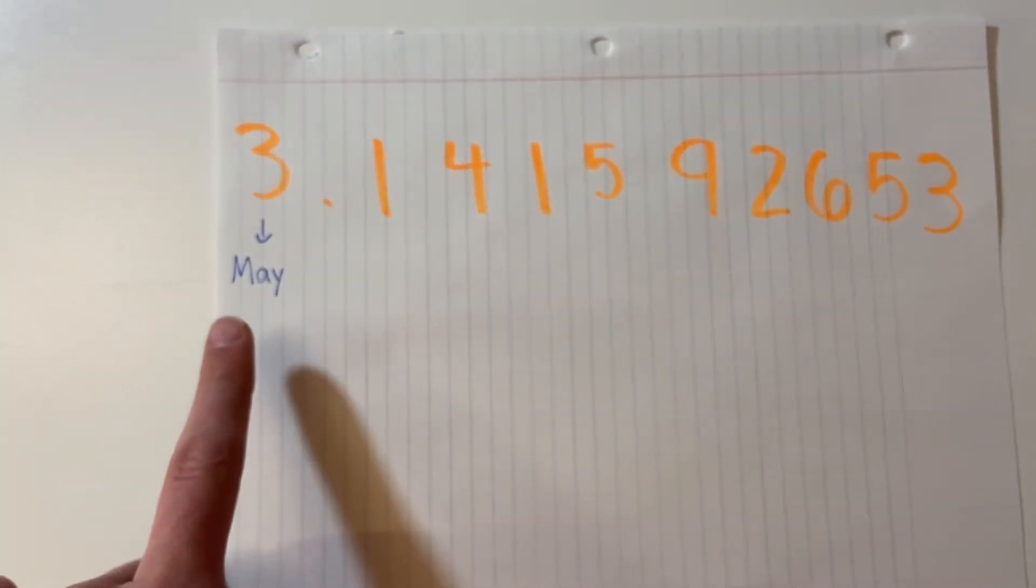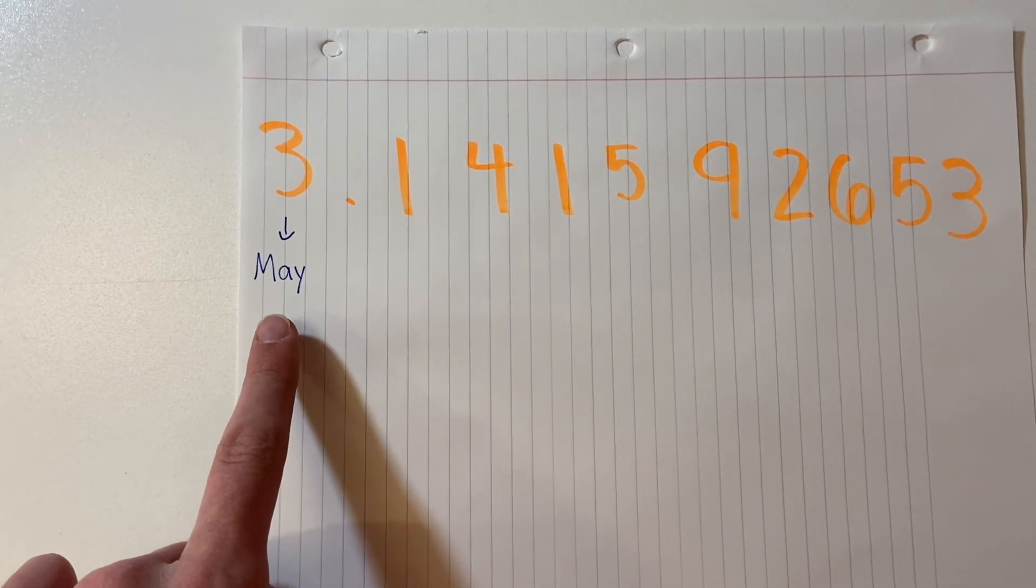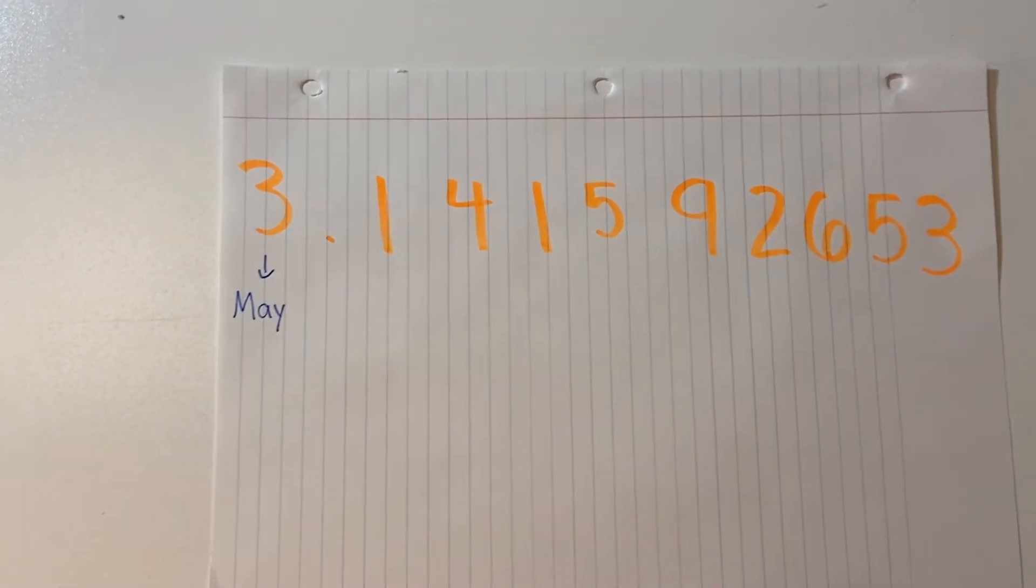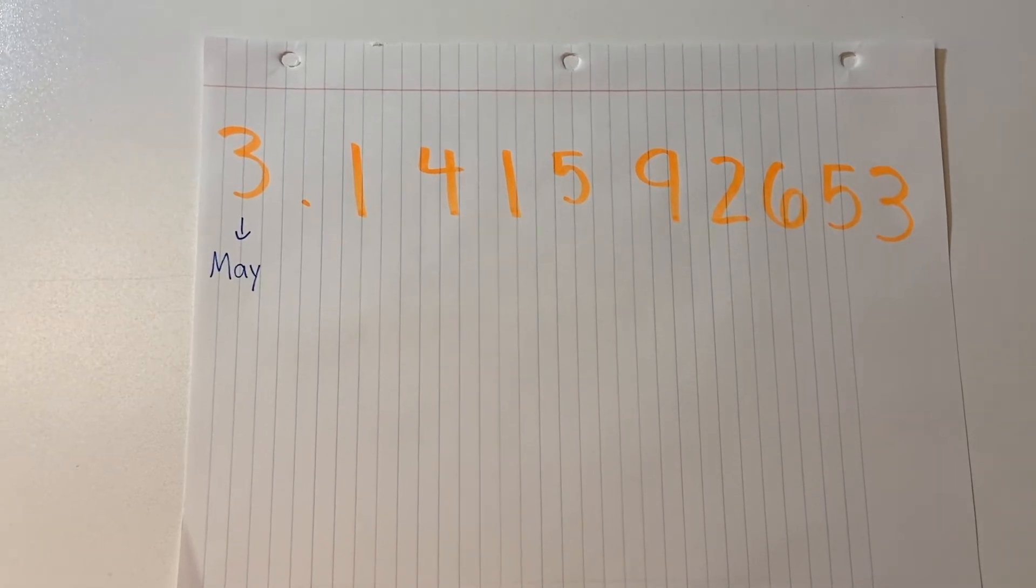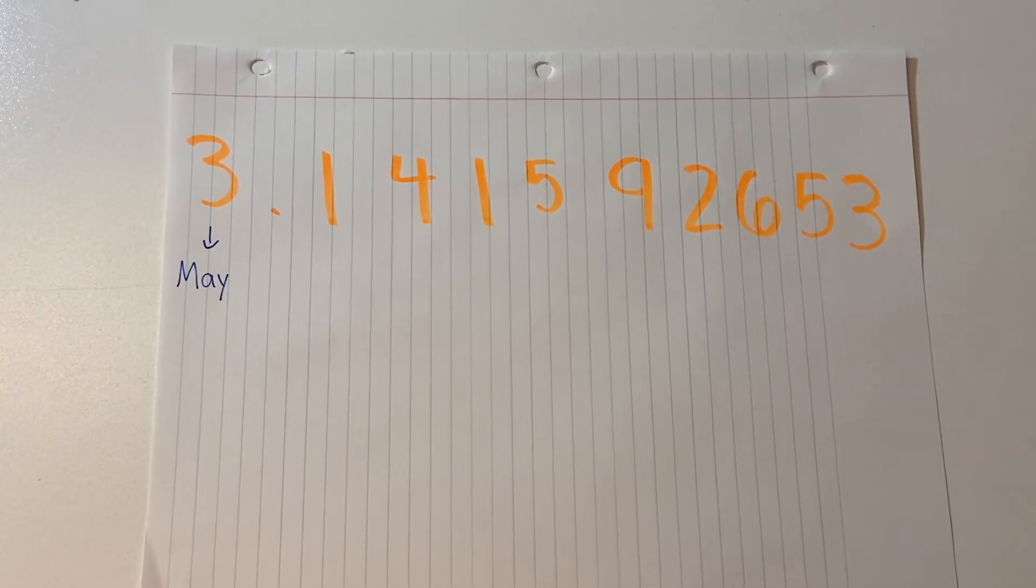For example, the word may has three letters, which correlates to the first digit of pi, which is 3. So now I'm going to continue this until I have a full sentence.